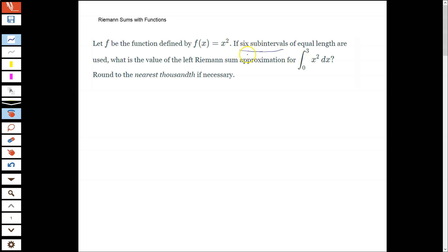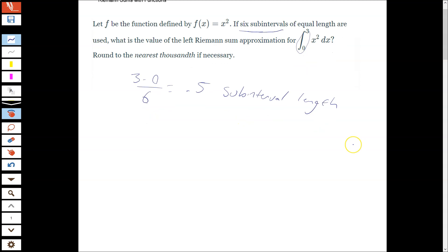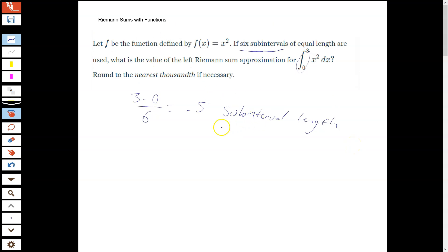So we have six subintervals of equal length, and our bounds are from 0 to 3. So it's still the same steps. To find the subinterval length, you're taking the bounds, the difference between the bounds divided by the number of subintervals. But in this case, they're going to be 0.5 units.